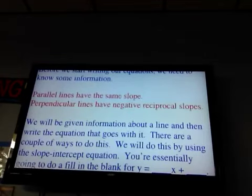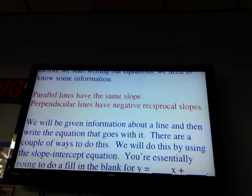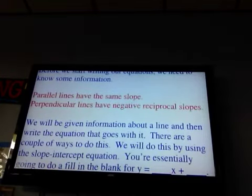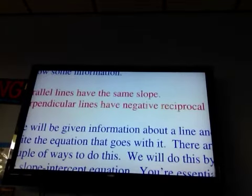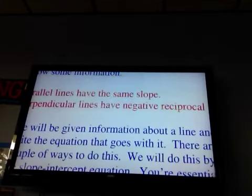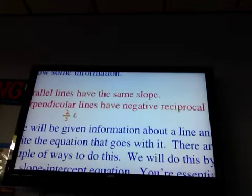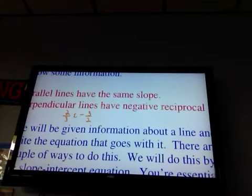Now, the other one though, if the lines are perpendicular, they have negative reciprocal slopes. Not as easy to know as the word same. So I'm going to give you some examples of that. Negative reciprocal slopes would be numbers like two-thirds and negative three-halves.